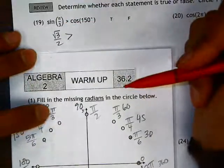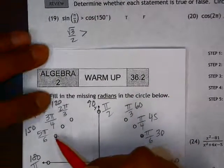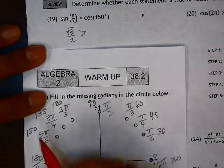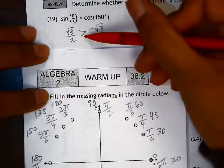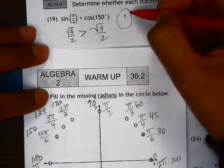We're checking if that's greater than cosine of 150. Cosine here is negative and the longest, negative root 3 over 2. Positive root 3 over 2 is larger than negative root 3 over 2, so that's true.